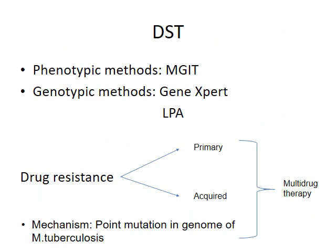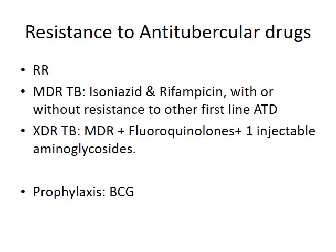For drug sensitivity testing, we can use the Mycobacterium Growth Indicator Tube as a phenotypic method. The genotypic methods available are GeneXpert and line probe assay. Drug resistance is one of the most worrisome aspects of TB management. RR is rifampicin resistance with or without resistance to other antitubercular drugs. MDR-TB is defined as resistance to isoniazid and rifampicin with or without resistance to other first-line drugs. XDR-TB is MDR-TB plus fluoroquinolone plus one injectable aminoglycoside.